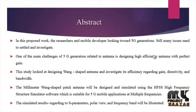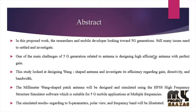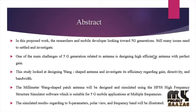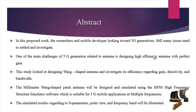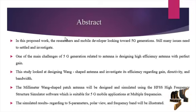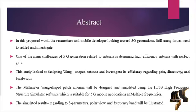Microstrip antennas basically consist of a radiating patch on one side of the dielectric substrate which has a ground plane on the other side. The patch is generally made of conducting material such as copper. The patch is very thin. The different radiating patches may be square, rectangle, thin strip, circular, elliptical, triangle, or any other configurations. The radiating element and the field lines are usually photo-etched on the dielectric substrate.